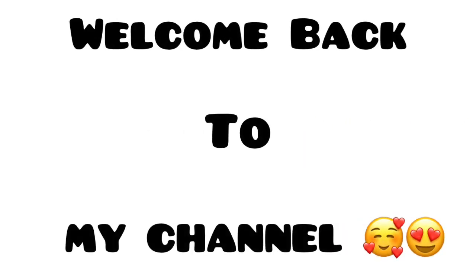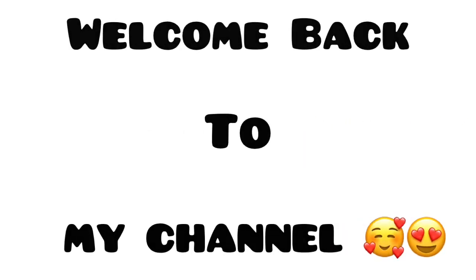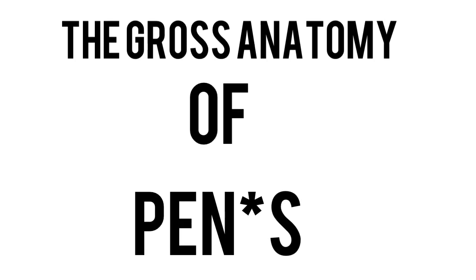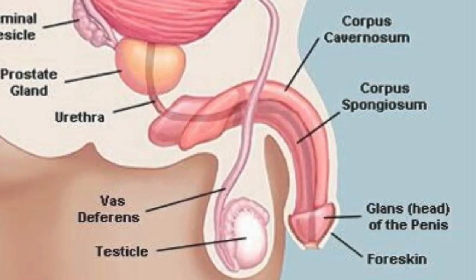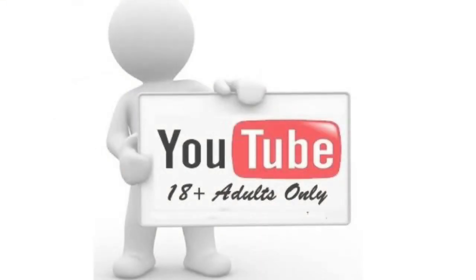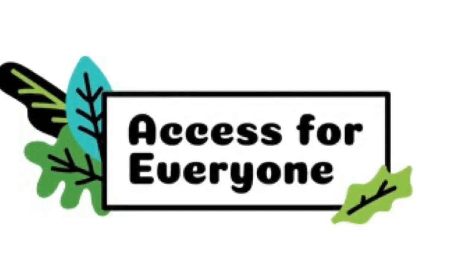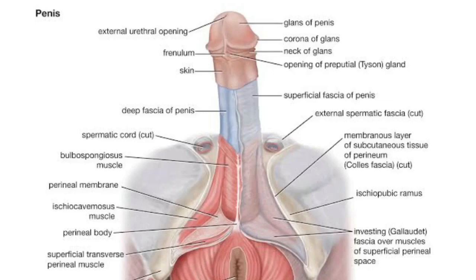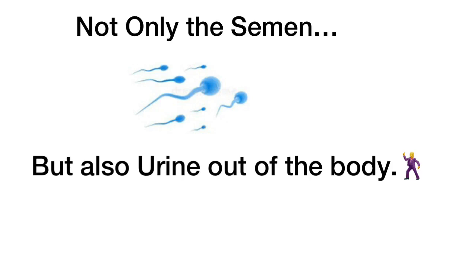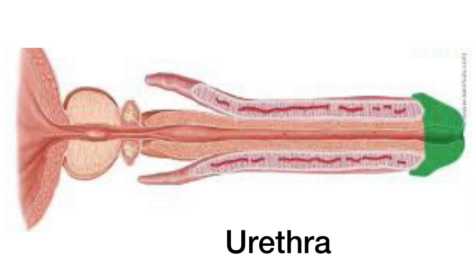Hello guys, welcome back to my YouTube channel. In this video we're going to talk about the gross anatomy of the p structure. The reason we're calling it the p structure is because of a regulation set by YouTube — they will restrict videos to a particular age bracket. The p structure is simply the male copulatory organ that conveys not only semen but also urine through the urethra to the external environment.